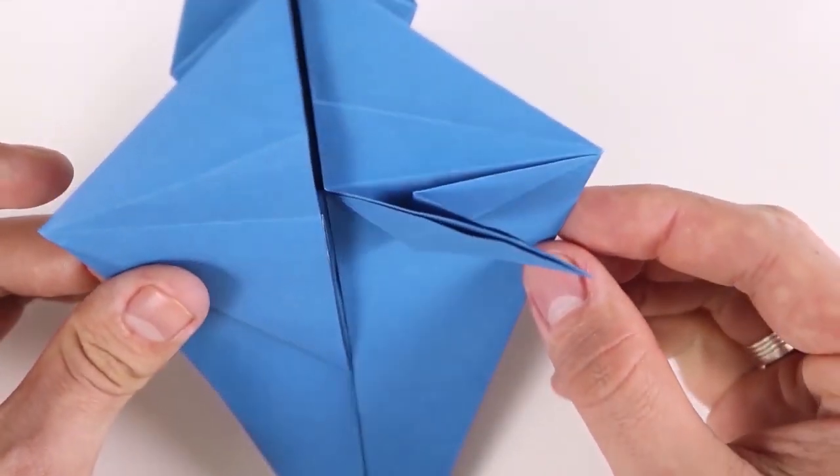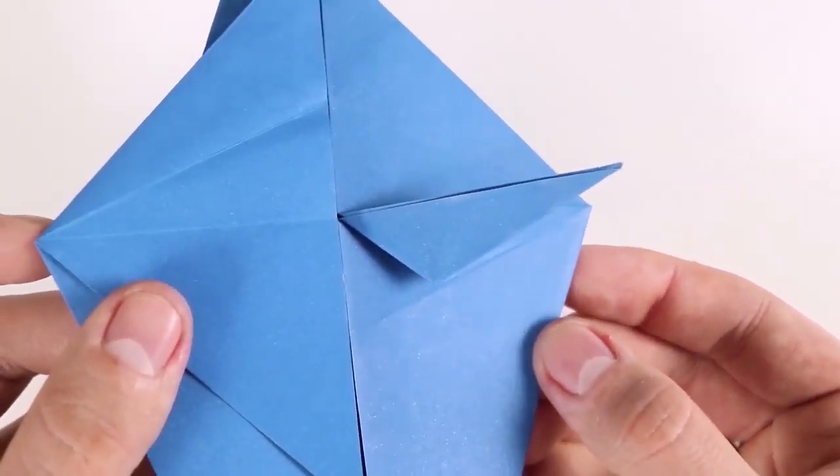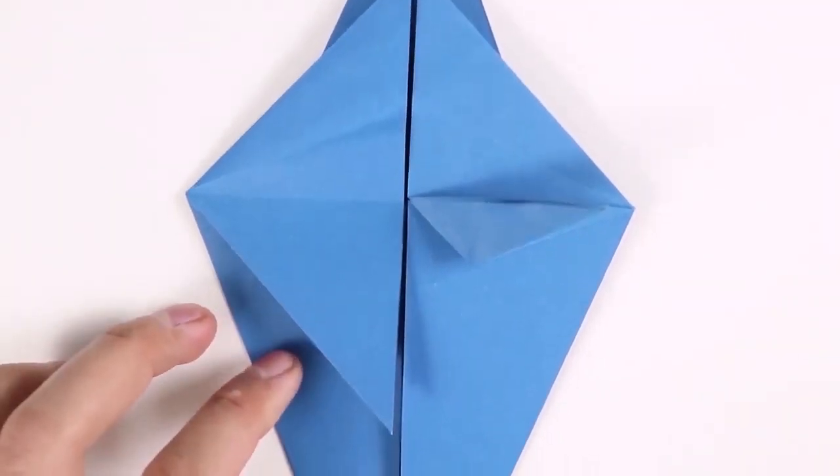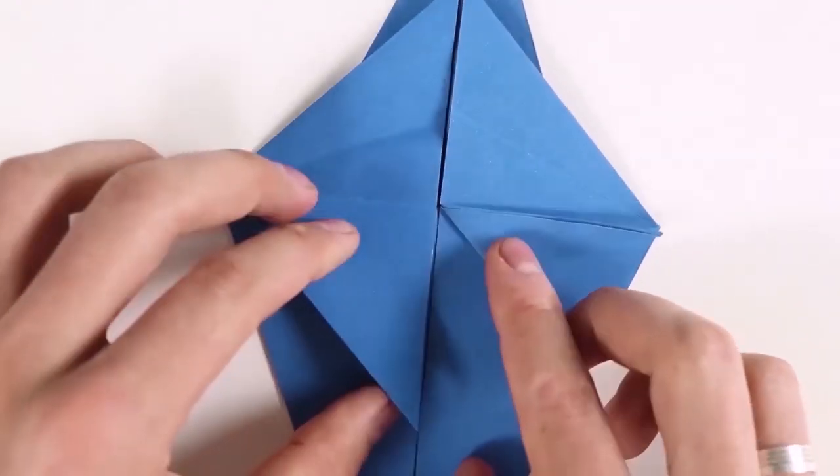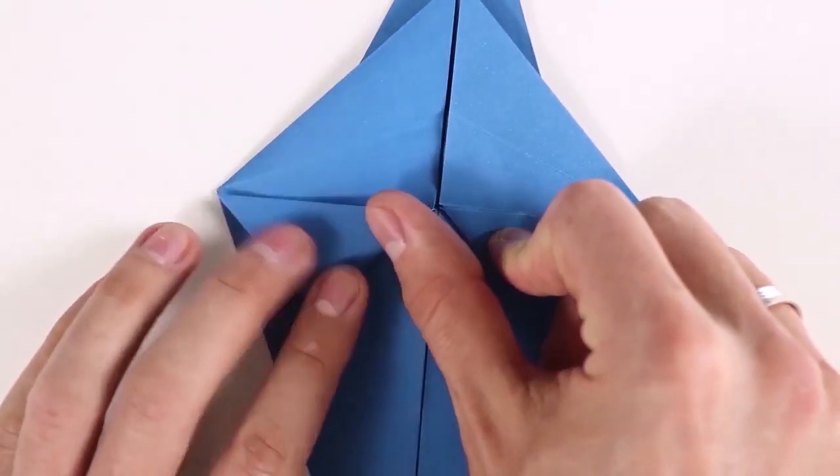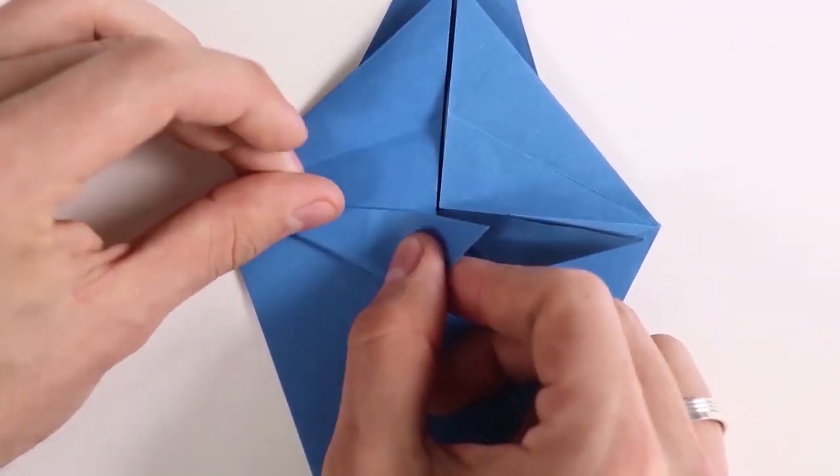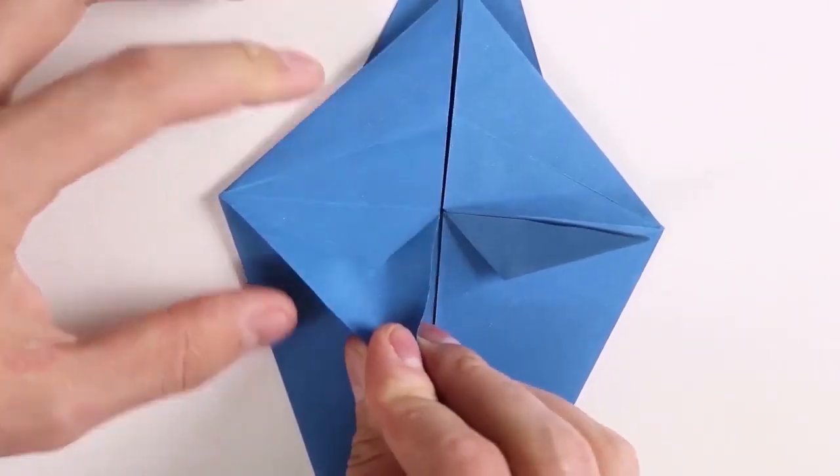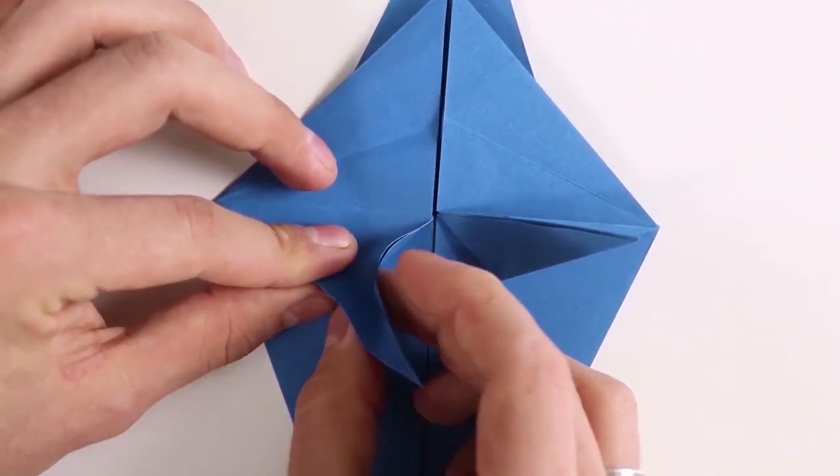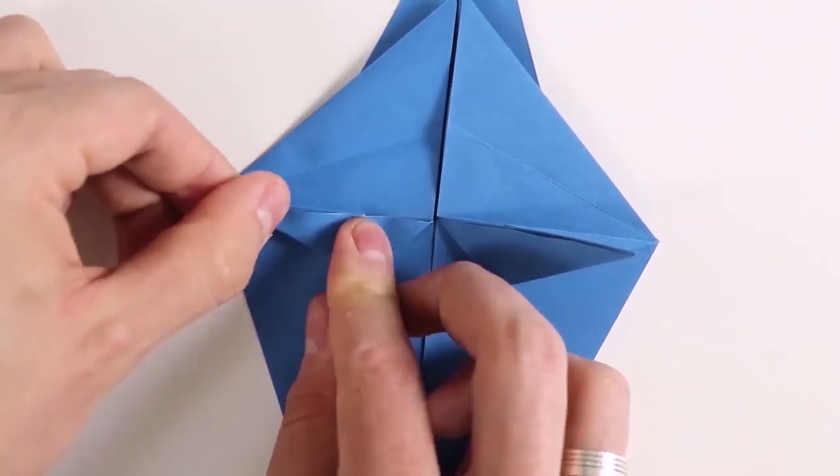This is the result. Now we just have to repeat the same step on the other side. First the edges up, creating the two first diagonals. Now close the corner, and bring it to the side.